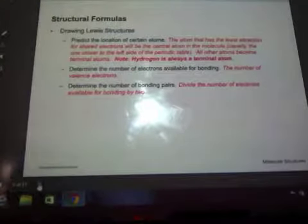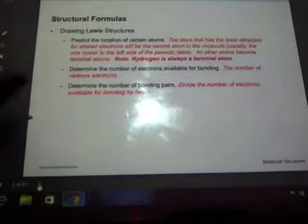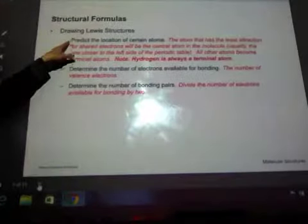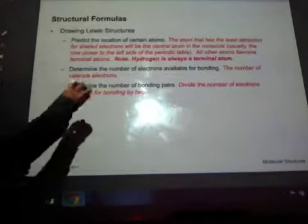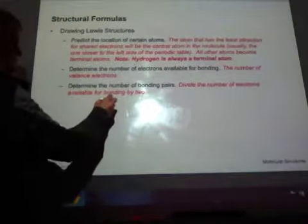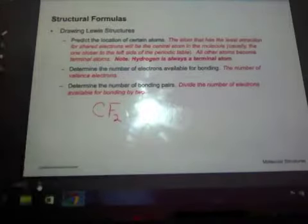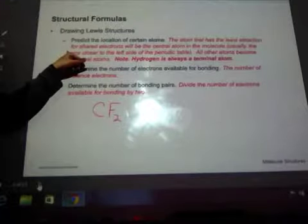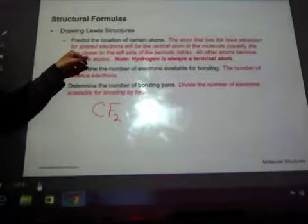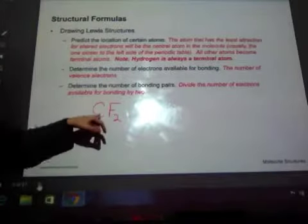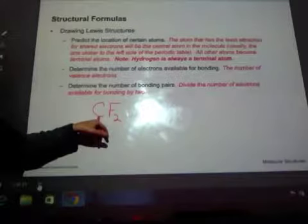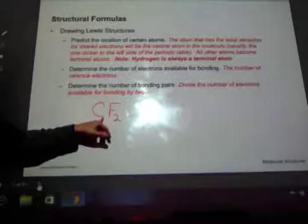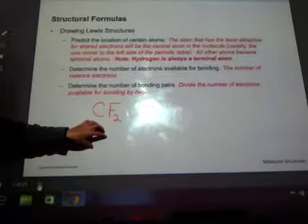So when we draw Lewis structures, these are the steps. You're going to predict the location of certain formulas. For example, if I have CF2, the atom that has the least attraction will be the central atom, and that's typically the one that's further to the left. If I look at carbon and fluorine, carbon is in group 4, fluorine is in group 7 or 17. Carbon is further to the left, so carbon is going to be the central atom.